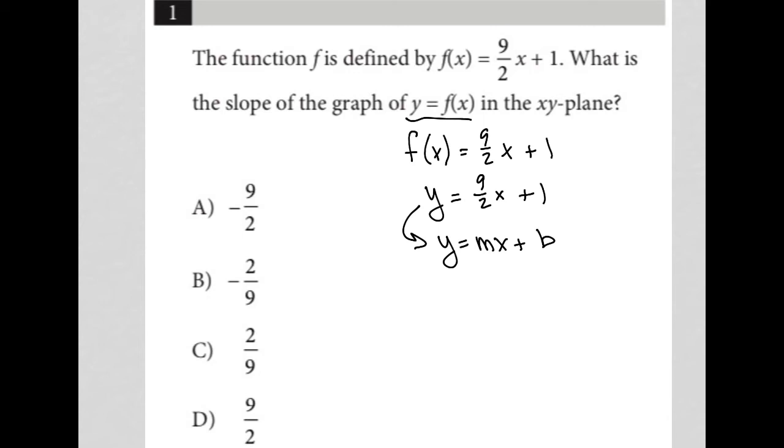And we can see then that m is 9 halves and b is positive 1. Remember that m, the number right in front of the x, is your m value. And m represents the slope. Whereas this b here, the number alone without a variable attached to it, is the y intercept.